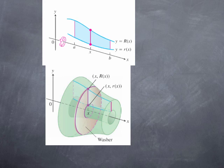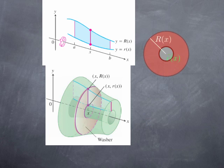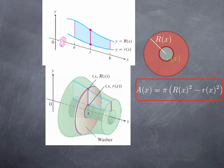If we take this washer and put it back in the plane of the board, the inner radius little r(x) corresponds to the value of the lower function and the outer radius capital R(x) corresponds to the value of the upper function. The area of the washer is the area of the outer disk, π·R², minus the area of the inner disk, π·r². So the area of the cross-section is π multiplied by the outer radius squared minus the inner radius squared.